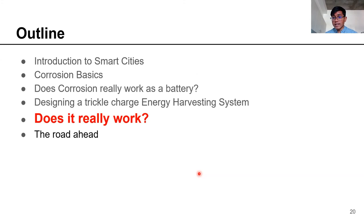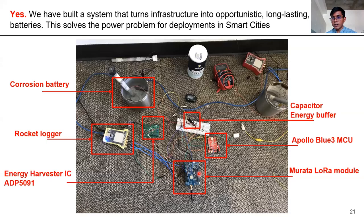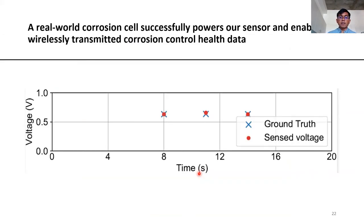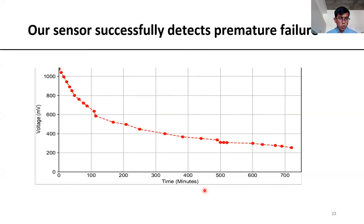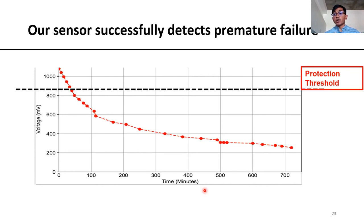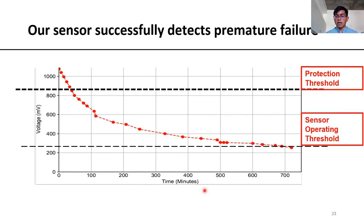Does this really work as a system? Yes — we built a system using commercial off-the-shelf components and verified that it works well. When we compare results with the ground truth, our system can report the health of the system quite accurately. On the y-axis is the voltage reported between the anode and the structure. The threshold that must be maintained to prevent corrosion is very high, but even as the protection capability degrades over time and corrosion seeps into the system, our sensor can still operate and report the current protection capability as long as it doesn't fall below the operating threshold — acting as an early warning system for pre-emptive maintenance.